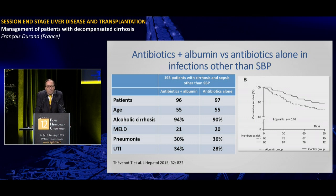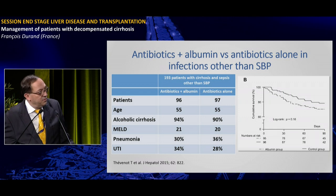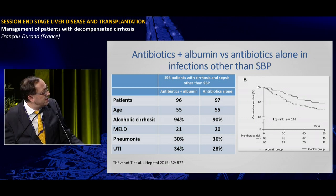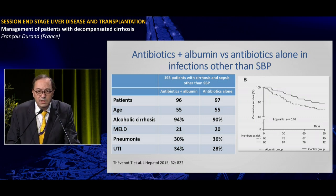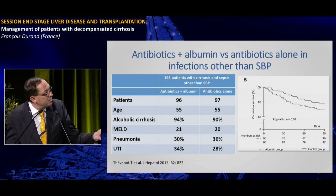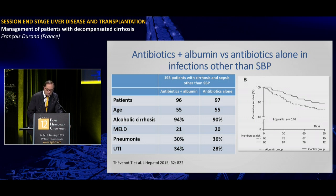Following this, other studies in patients with non-SBP infections showed contrasting results. One French study with almost 100 patients per group randomized patients with non-SBP infections to antibiotic plus albumin versus antibiotic alone. The main causes of infection were pneumonia and urinary tract infection. The authors failed to show a survival difference between the two groups. A Spanish study showed similar results.